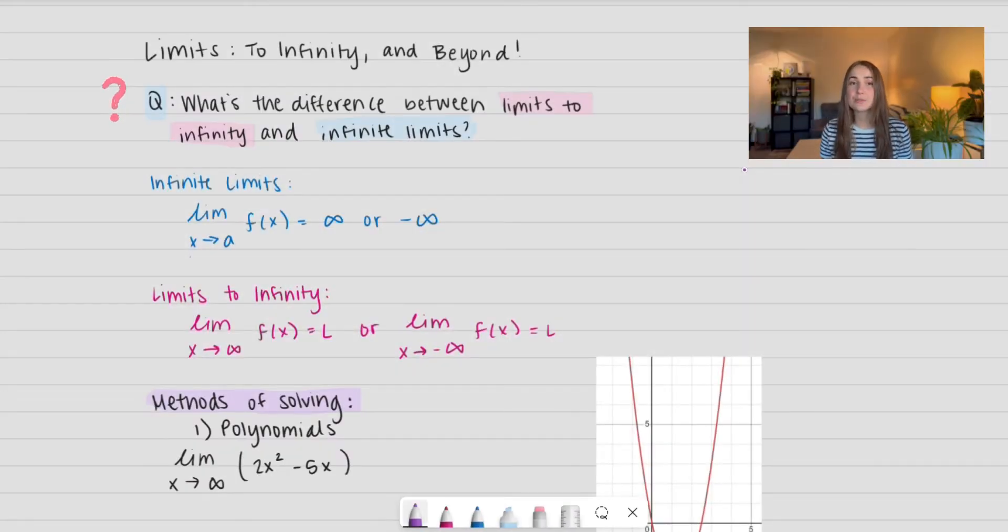Question of the day, what's the difference between limits to infinity and infinite limits? So I have the definition written out here of both of them. Let's go ahead and look at infinite limits. It is a limit as x approaches a of f(x), and it equals infinity or negative infinity. That's the big part. It is equal to infinity, which is why it's an infinite limit. So if we look at the difference between that and limits to infinity, we take the limit as x approaches infinity. So x is going to infinity, or x is going to negative infinity. It doesn't necessarily equal infinity. So that's the big difference.